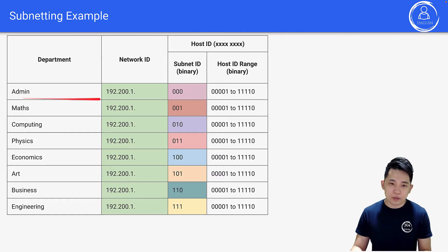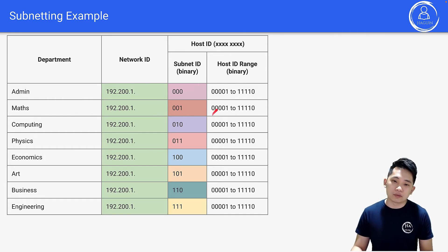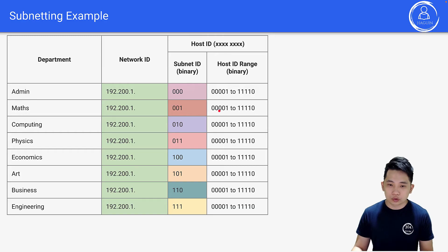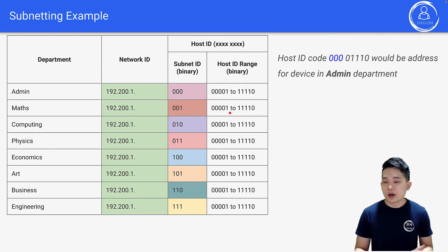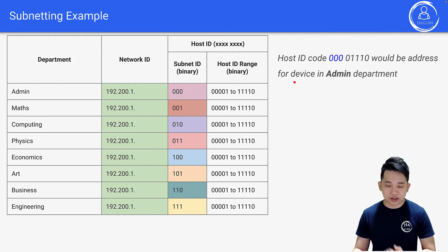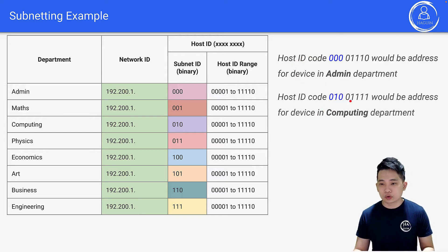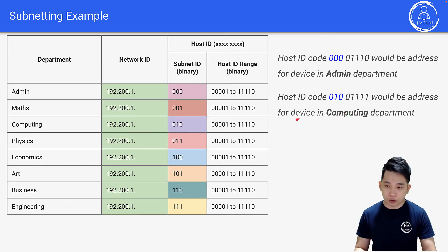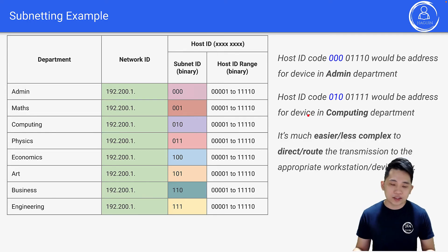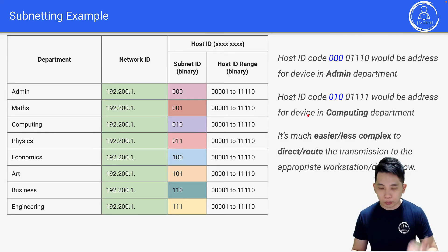For example, admin gets subnet ID 000, math gets 001, and computer gets 010. The host ID ranges from 00000 to 11110 within each subnet. So a host ID code of 001 01110 would be an address for a device in the math department, and 010 01111 would be for a device in the computer department. Subnetting makes it much easier and less complex to route transmissions to the appropriate device.